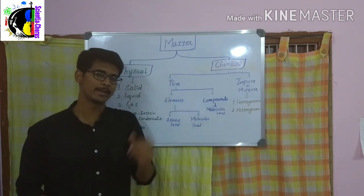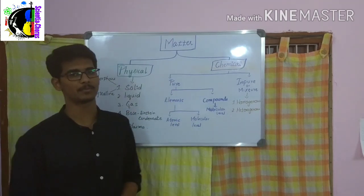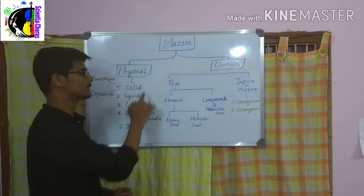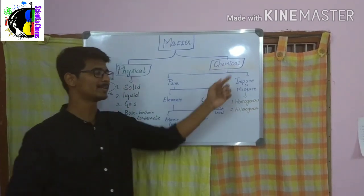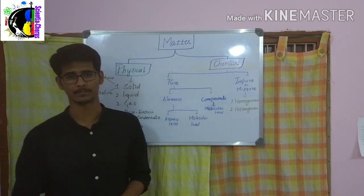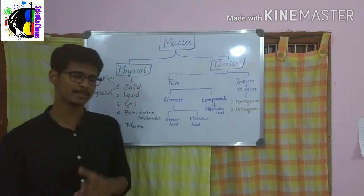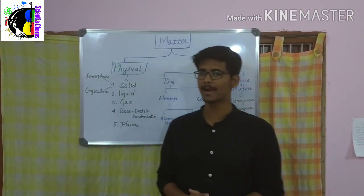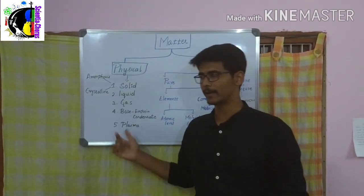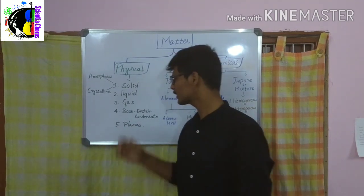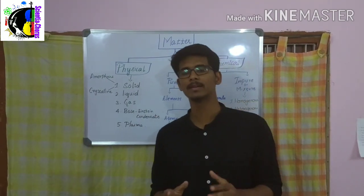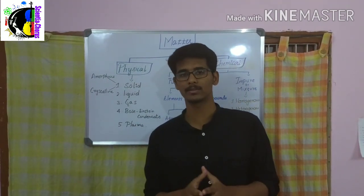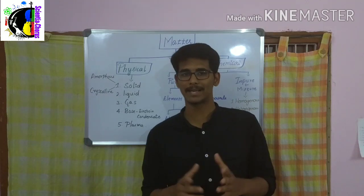In two ways, we can classify matter: on the basis of physical state and on the basis of chemical composition. On the basis of physical state, we can divide matter into five types. The first one is solid, liquid, gas, Bose-Einstein condensate, and plasma.